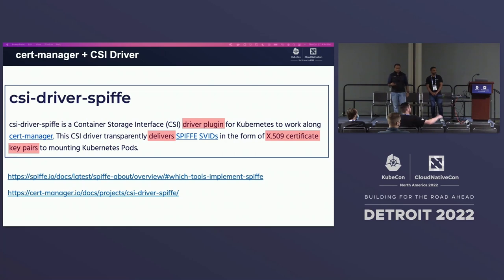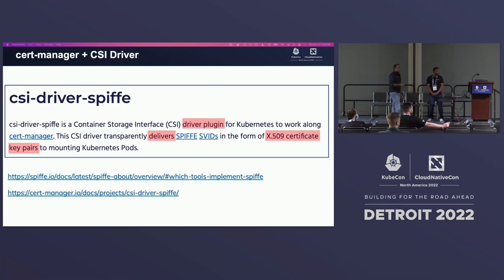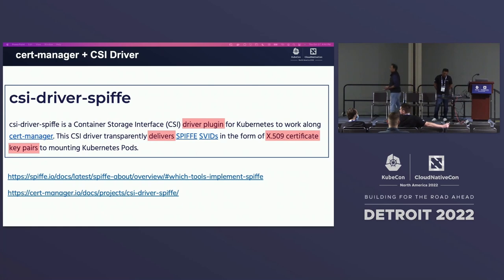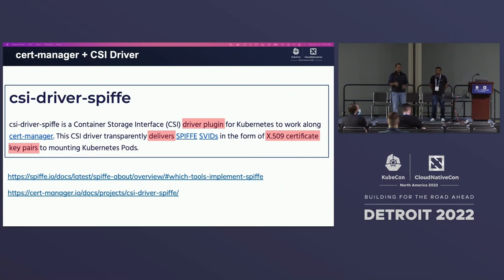The first add-on is the CertManager CSI Driver SPIFFE — a CSI plugin that gives you an automated way of injecting SPIFFE SVIDs into your workloads. Anytime you need an X.509 certificate mounted in a pod that is a SPIFFE SVID, you just use the CSI Driver SPIFFE. All you do is add some volume attributes in your deployment specification, and automatically you will have a certificate injected into it.